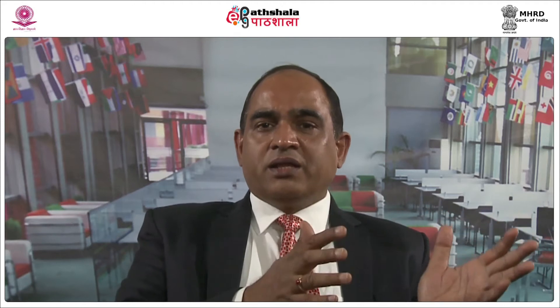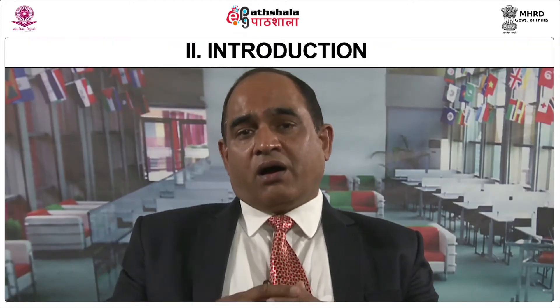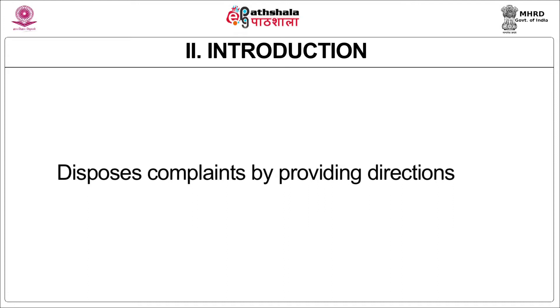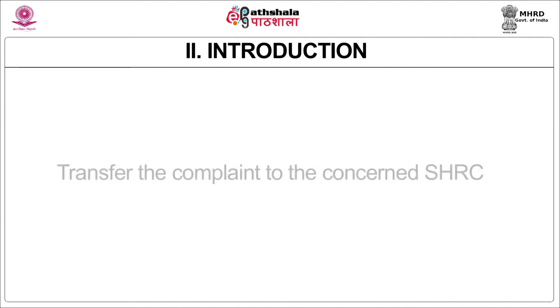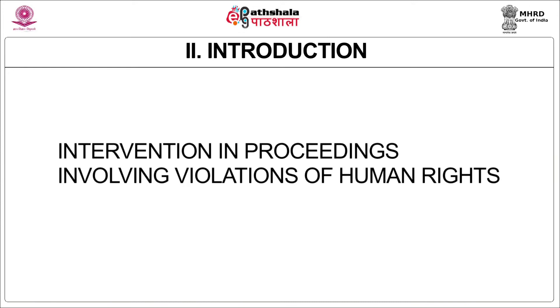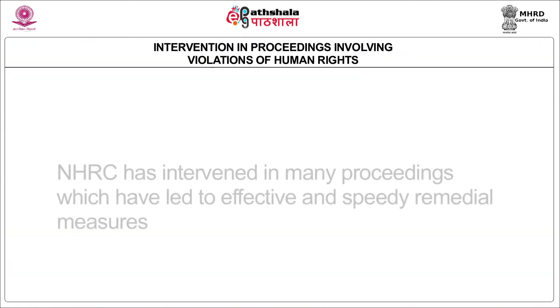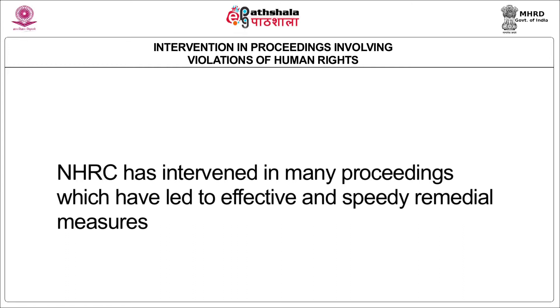When the commission receives a complaint, it can either dismiss it if it does not fall under its jurisdiction under the Protection of Human Rights Act, or it can dispose the complaint by providing directions to the authorities concerned. The commission can also transfer the complaint to the concerned State Human Rights Commission to handle it and provide redress, and can make other recommendations to the authorities concerned. Section 12B of the Protection of Human Rights Act provides for the intervention of the National Human Rights Commission in a pending court proceeding with the permission of that court. In pursuance of Section 12B, NHRC has intervened in several proceedings which have led to effective and speedy remedial measures.